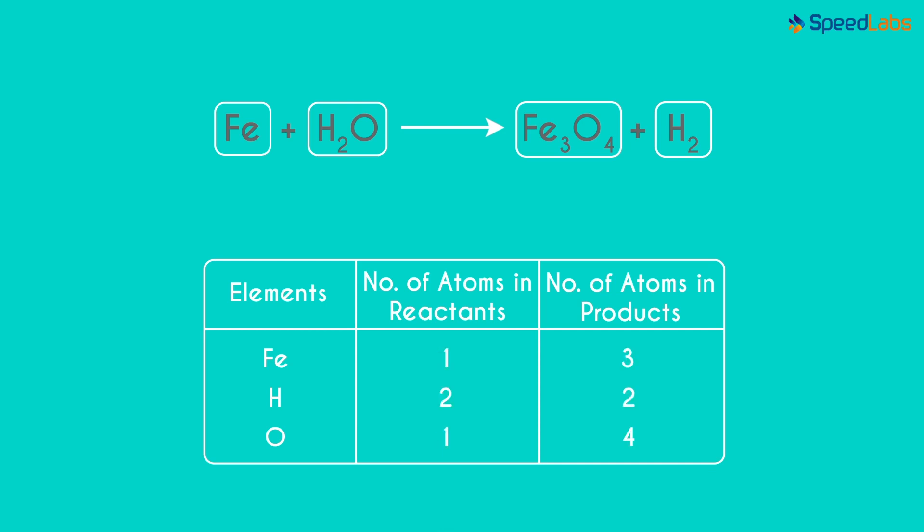This is how the table would look. You see that Iron and Oxygen are not balanced in this equation. So the important question is, which atom should we start balancing first? Should it be Iron or should it be Oxygen? That's where the third step comes in.